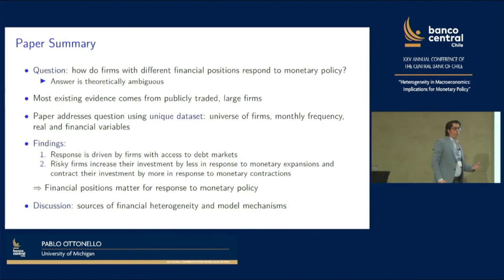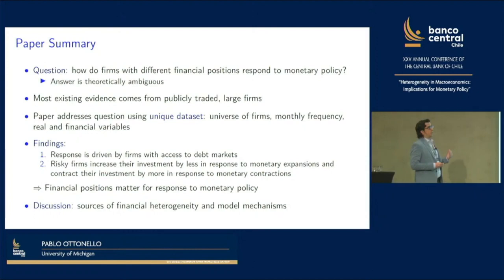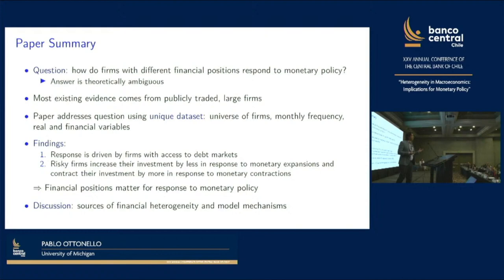How do firms with different financial positions respond to monetary policy? You can have many reasons for heterogeneity, but the paper focuses on financial positions. The answer to this question is theoretically ambiguous. On one hand, firms that have risk face a steep marginal cost curve to finance investment, and that dampens the response to monetary policy. On the other hand, to the extent that monetary policy alleviates these frictions — for example, by increasing cash flows or improving collateral values — that can amplify the response of these risky firms.